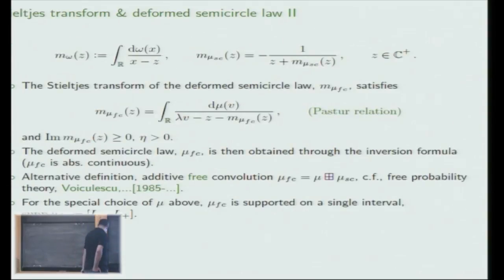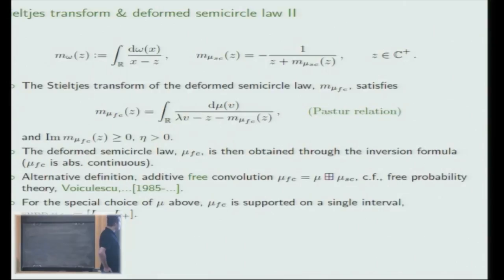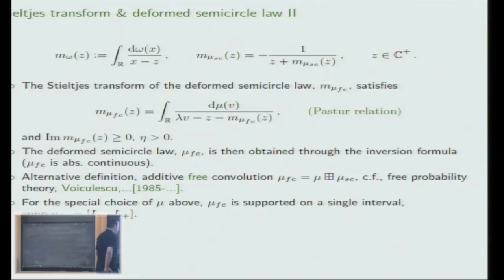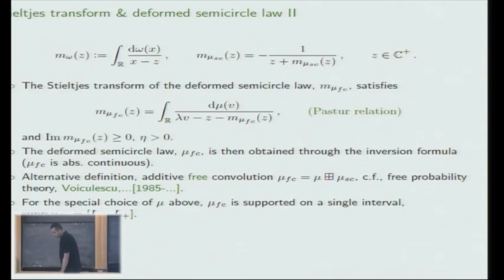The deformed semicircle law is defined in exactly that way. Its Stieltjes transform satisfies this type of relation, sometimes called the Bartels relation—a generalization of the semicircle relation. The first thing to check is that this equation actually has a unique solution, which is not too hard to see if one imposes that the imaginary part of M_mu(z) is positive. Once you have solved for this, you feed it into the inversion formula, and this defines a measure that turns out to be absolutely continuous, with a density that is a regular function inside the support. An alternative definition is through Voiculescu's free probability theory: it can be described as the additive free convolution of the semicircle law and the measure mu.